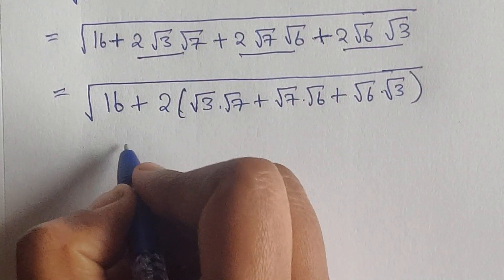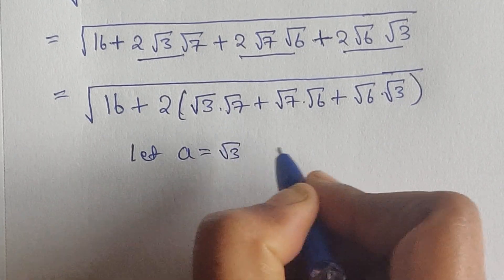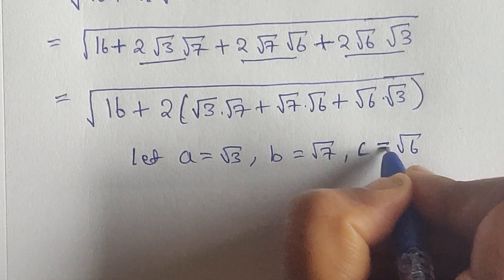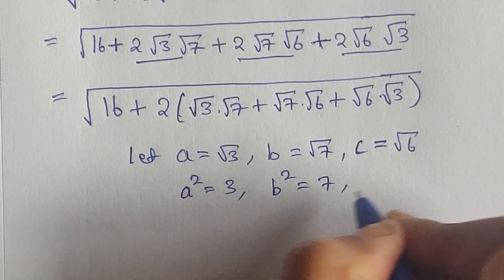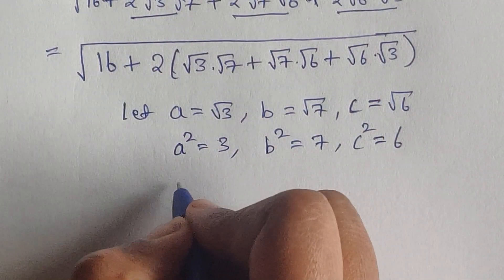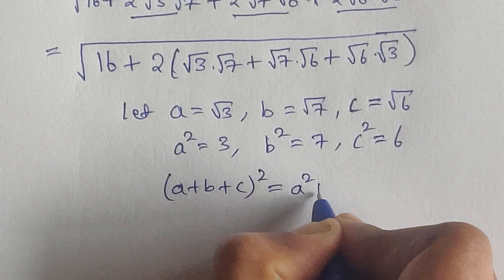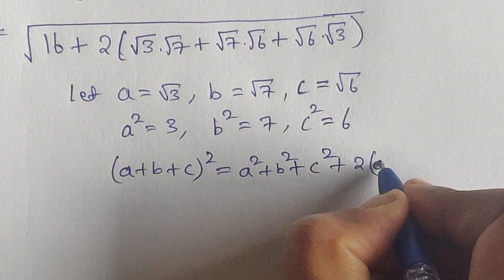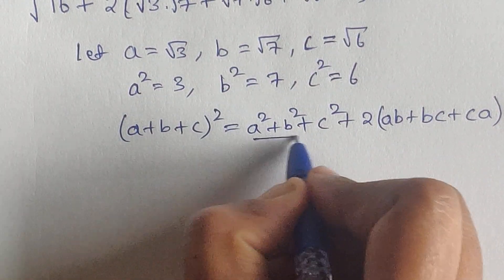Now let us consider a equals square root of 3, b equals square root of 7, and c equals square root of 6. So a squared equals 3, b squared equals 7, and c squared equals 6. Recall the formula: a plus b plus c, whole squared, equals a squared plus b squared plus c squared plus 2 times (ab plus bc plus ca).